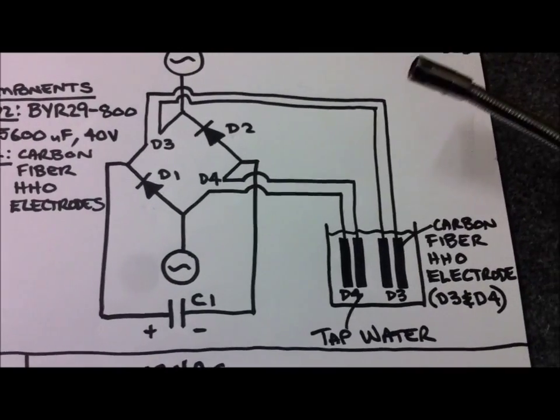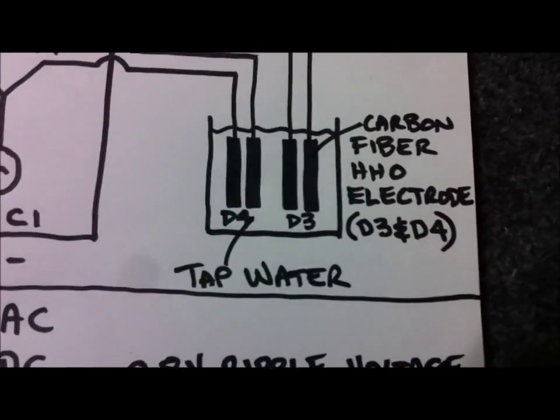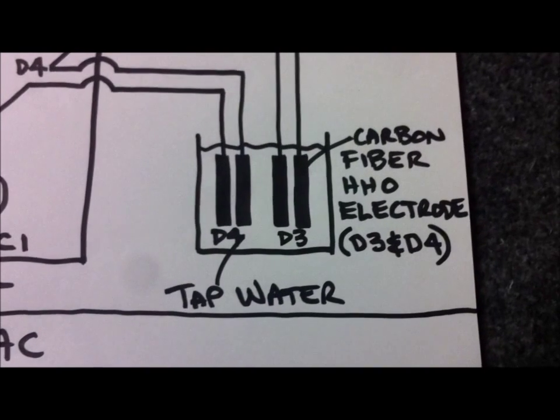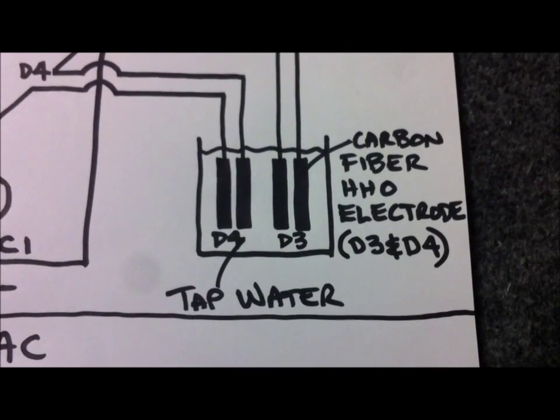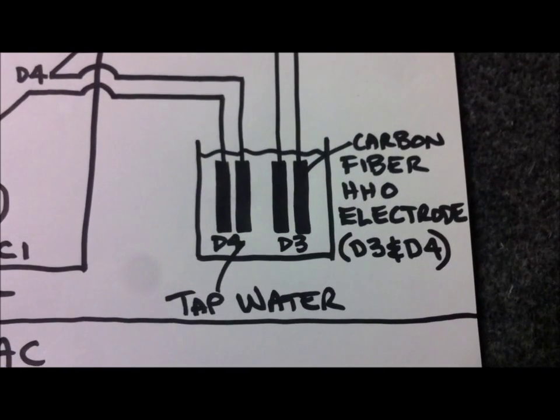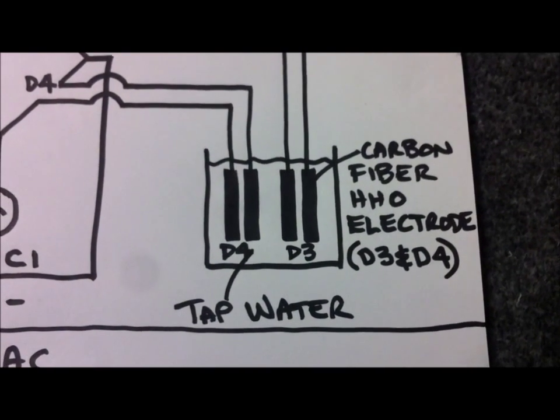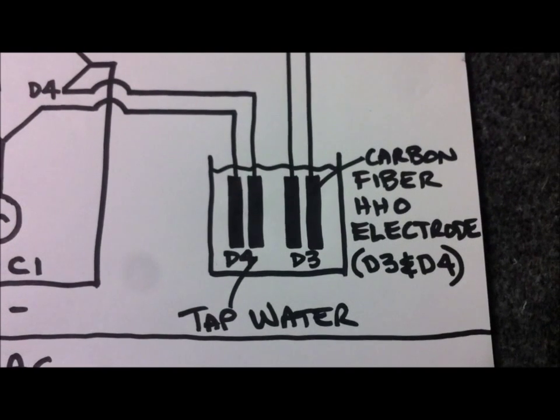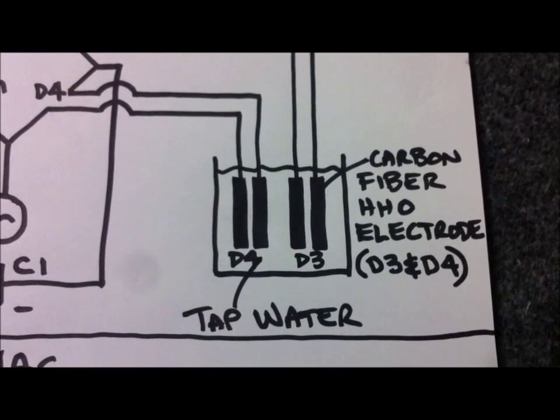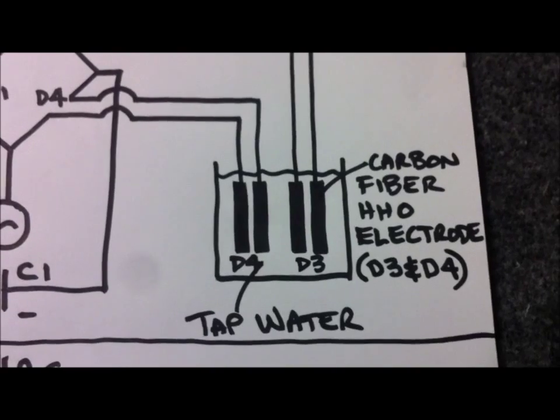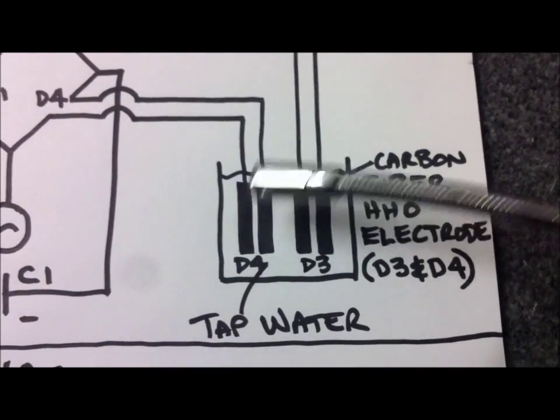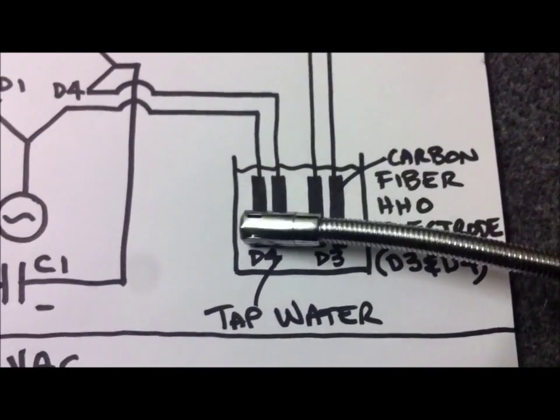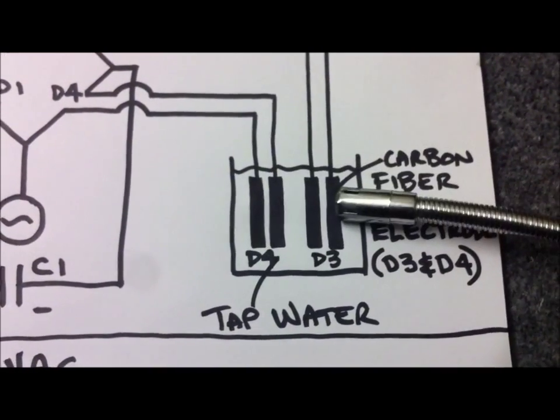So now I'm thinking the only way that we're going to be able to increase production, apart from using electrolyte which is not something that I'm favouring or leaning towards, is to increase the frequency of the AC signal coming into the rectifier because of the fact that D3 and D4 are producing the HHO on every rectified peak.